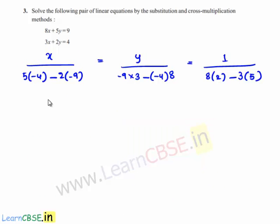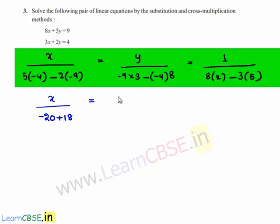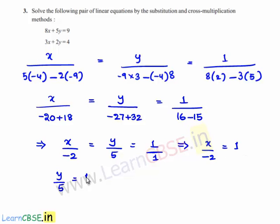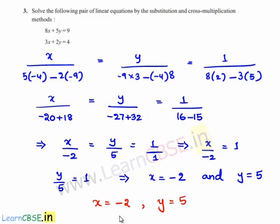Now we get x divided by (minus 20 plus 18) is equal to y divided by (minus 27 plus 32) is equal to 1 divided by (16 minus 15). That implies x by minus 2 is equal to y by 5 is equal to 1 by 1. So x is equal to minus 2 and y is equal to 5. Therefore the required solutions are x is equal to minus 2 and y is equal to 5.